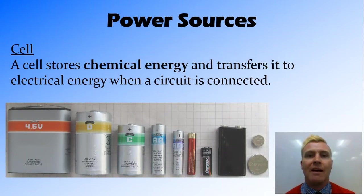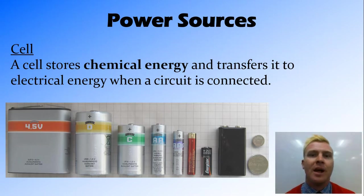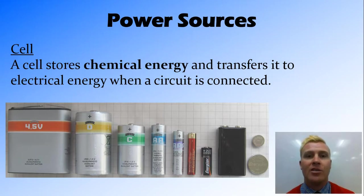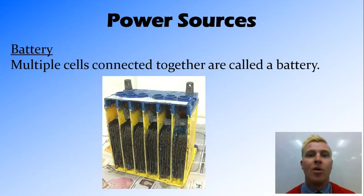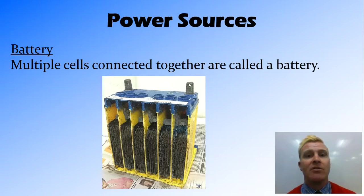One power source that we can have is a cell — you might refer to a cell as a battery, but in science we talk about it as a cell. It stores chemical energy, and there's a chemical reaction that occurs turning that chemical energy into electrical energy when it is connected up. Most cells run at about 1.5 volts. When you connect multiple cells together, we refer to this as a battery. For example, a car battery has six cells connected together, each of 1.5 volts, making a total of 12 volts.